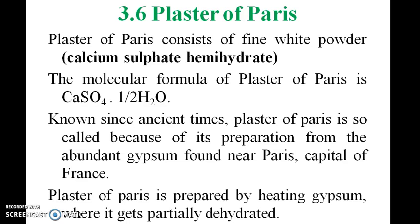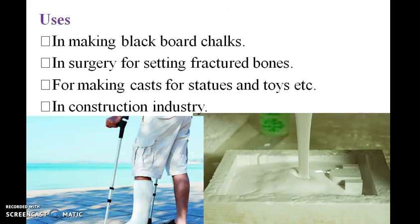Plaster of Paris is a combination of calcium sulphate hemihydrate, a white powder with formula CaSO4·½H2O. Known since ancient times, it is so called because of its preparation from the abundant gypsum found near Paris, capital of France. It is prepared by heating gypsum, where it is partially dehydrated. It is used for making block moulds, chalk, in surgery for setting fractured bones, and for making casts of statues and toys.